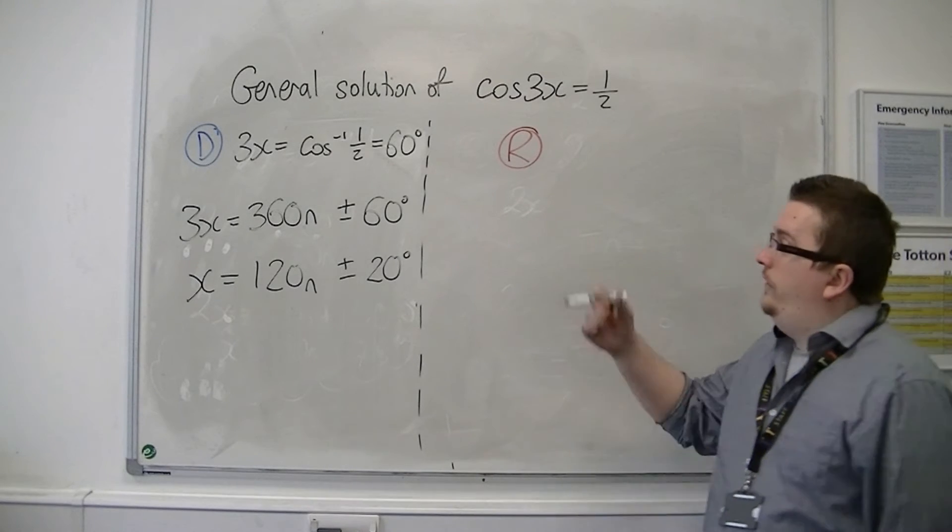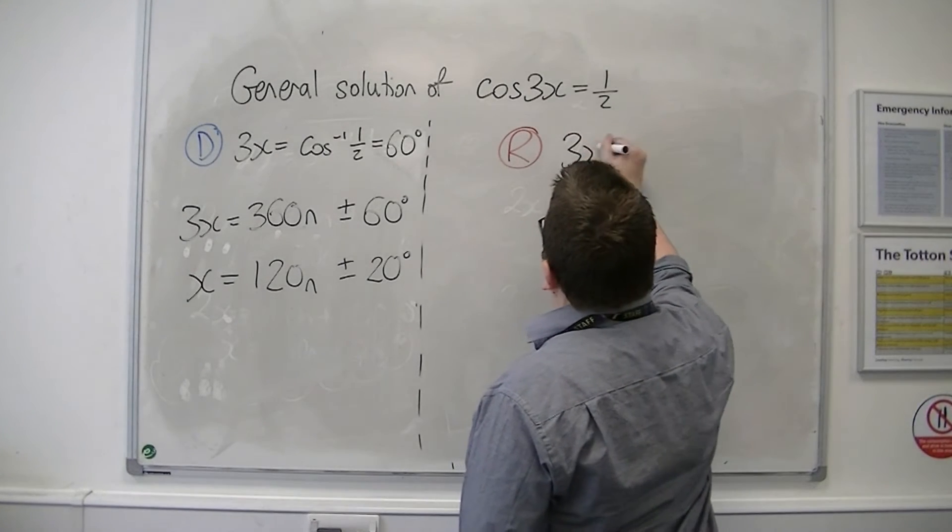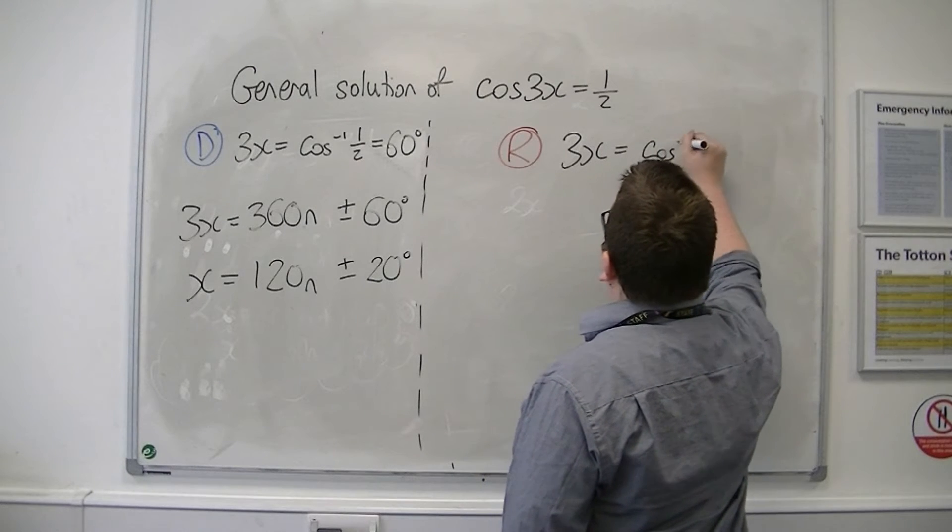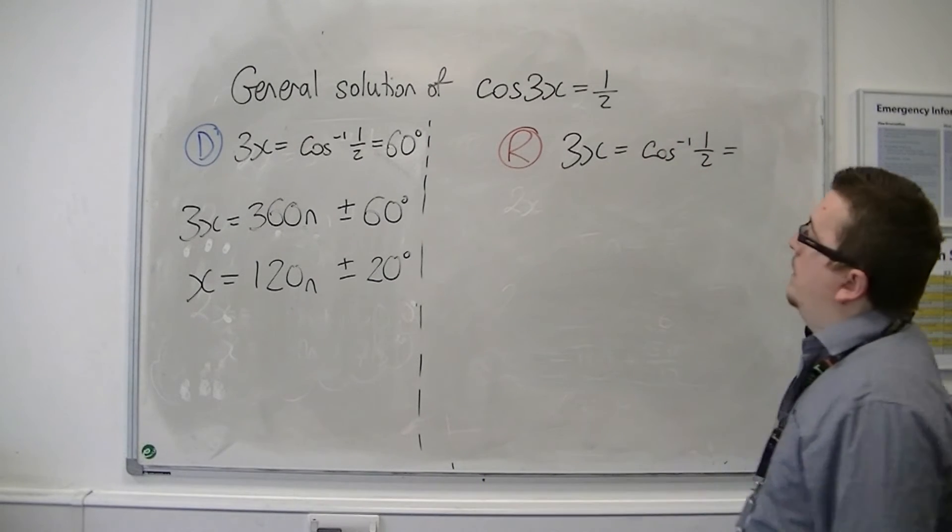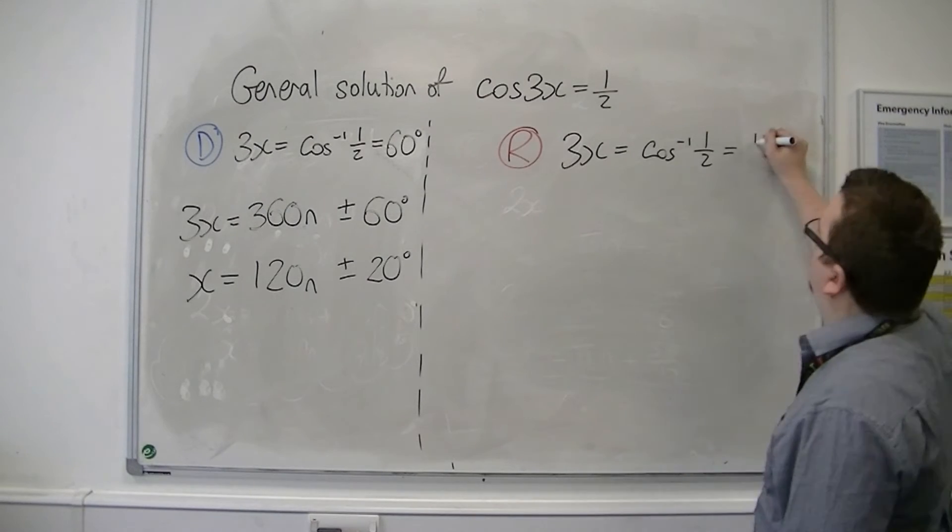For radians, inverse cosine both sides. Inverse cos of 1 half in radians is pi over 3.